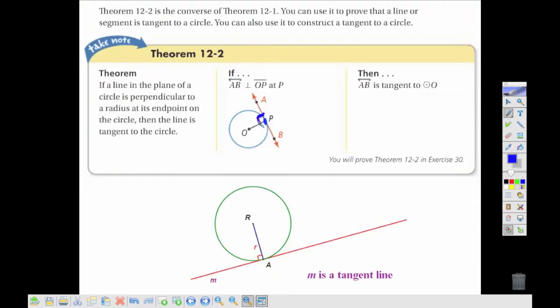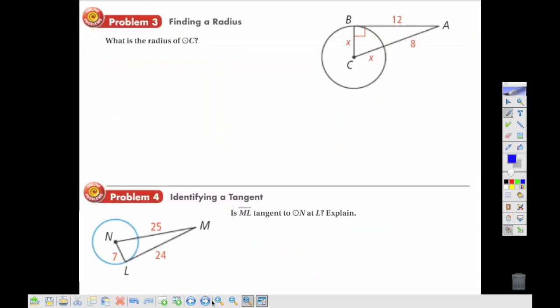This theorem is just the opposite of that, it's saying if we're touching the circle and we know that we're perpendicular to that radius, then it has to be a tangent line. So if we know we have a right angle to a tangent line, then we also know that this is a radius. So if we want to find the radius here, which would be x, notice it's drawn in two different places,